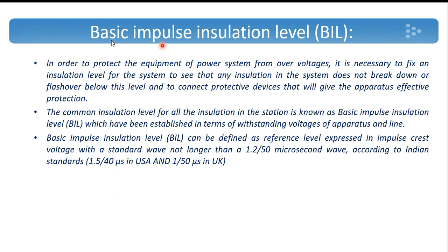The insulation level of a particular station is expressed in terms of Basic Impulse Insulation Level or BIL. Usually, the impulse insulation level of protective devices will be the minimum value. Transformers should have insulation levels 10% more than the protective devices. Transmission lines have more insulation strength than transformers, and bus bars have even more insulation strength than transmission lines. This hierarchy of insulation strength across the power system is called insulation coordination.